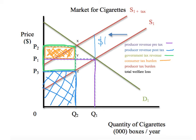What's left? This box here — the portion of the $1 tax that the producers are going to pay. Producers used to get P1, but now as a result of this tax they're only getting P3. So this portion — P1 to P3 — represents the amount of the tax that the producers are going to pay.